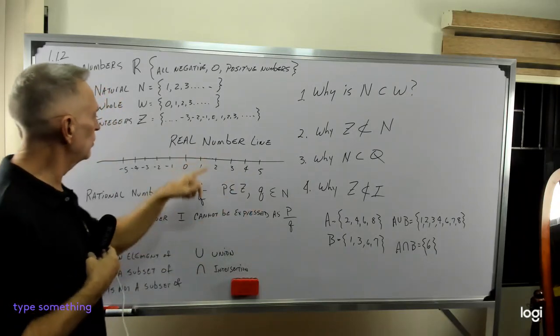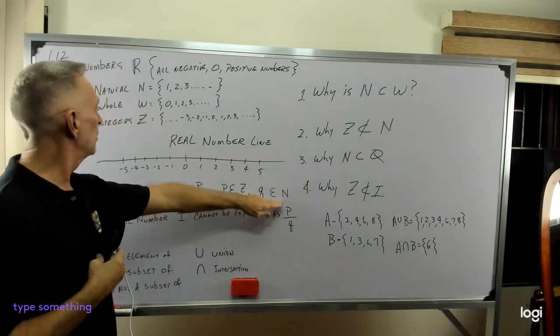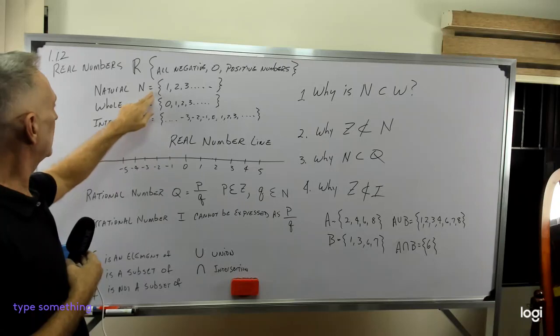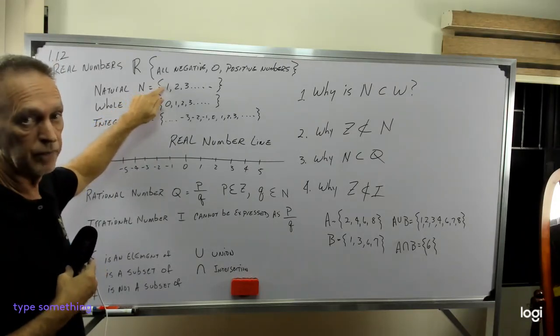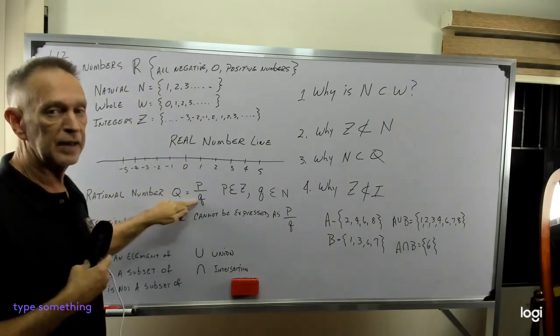Now you might ask, well, why is that? Well, q, you'll notice, since it's an element of N, the natural numbers, it does not include zero. We can't divide by zero.